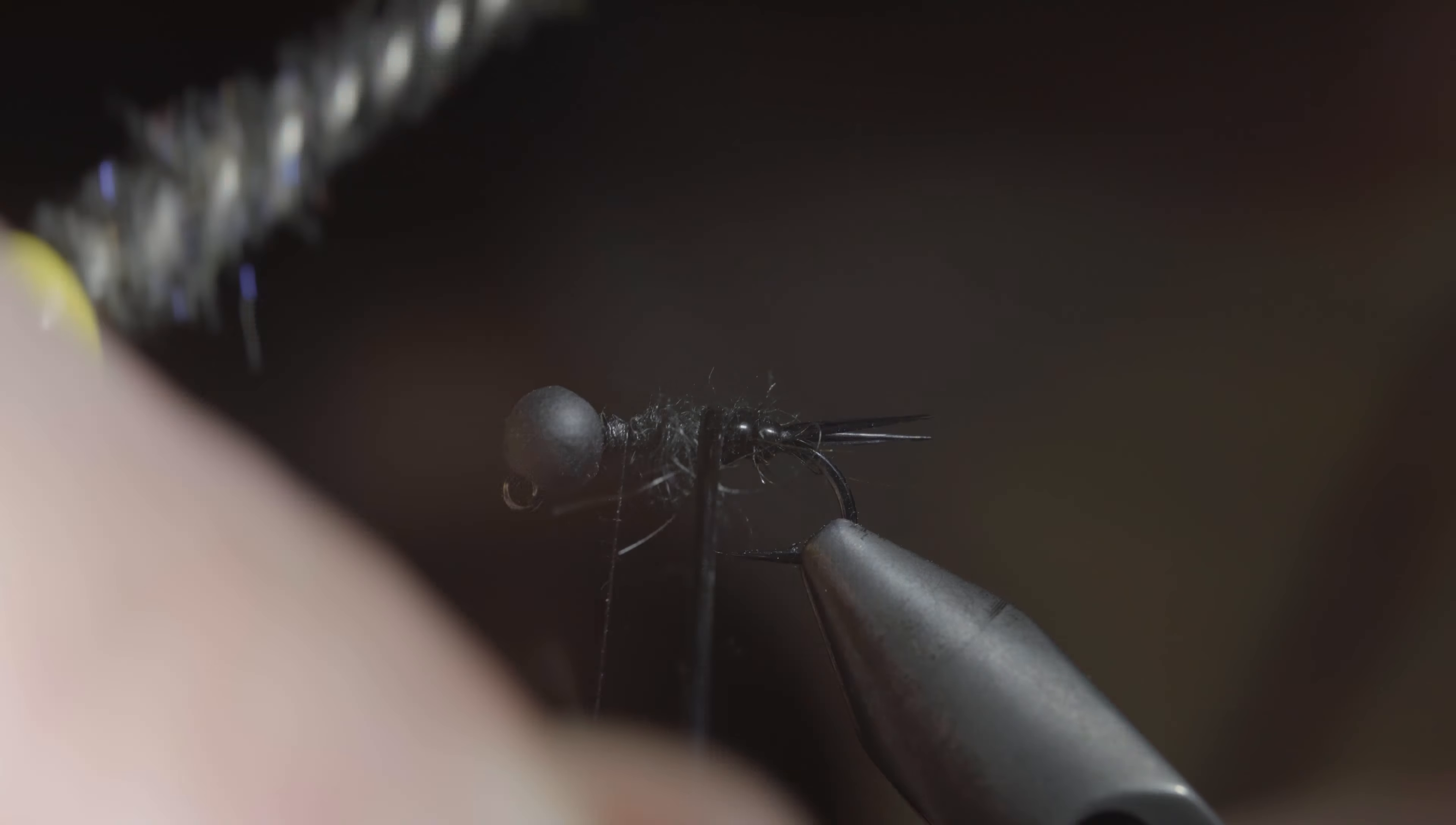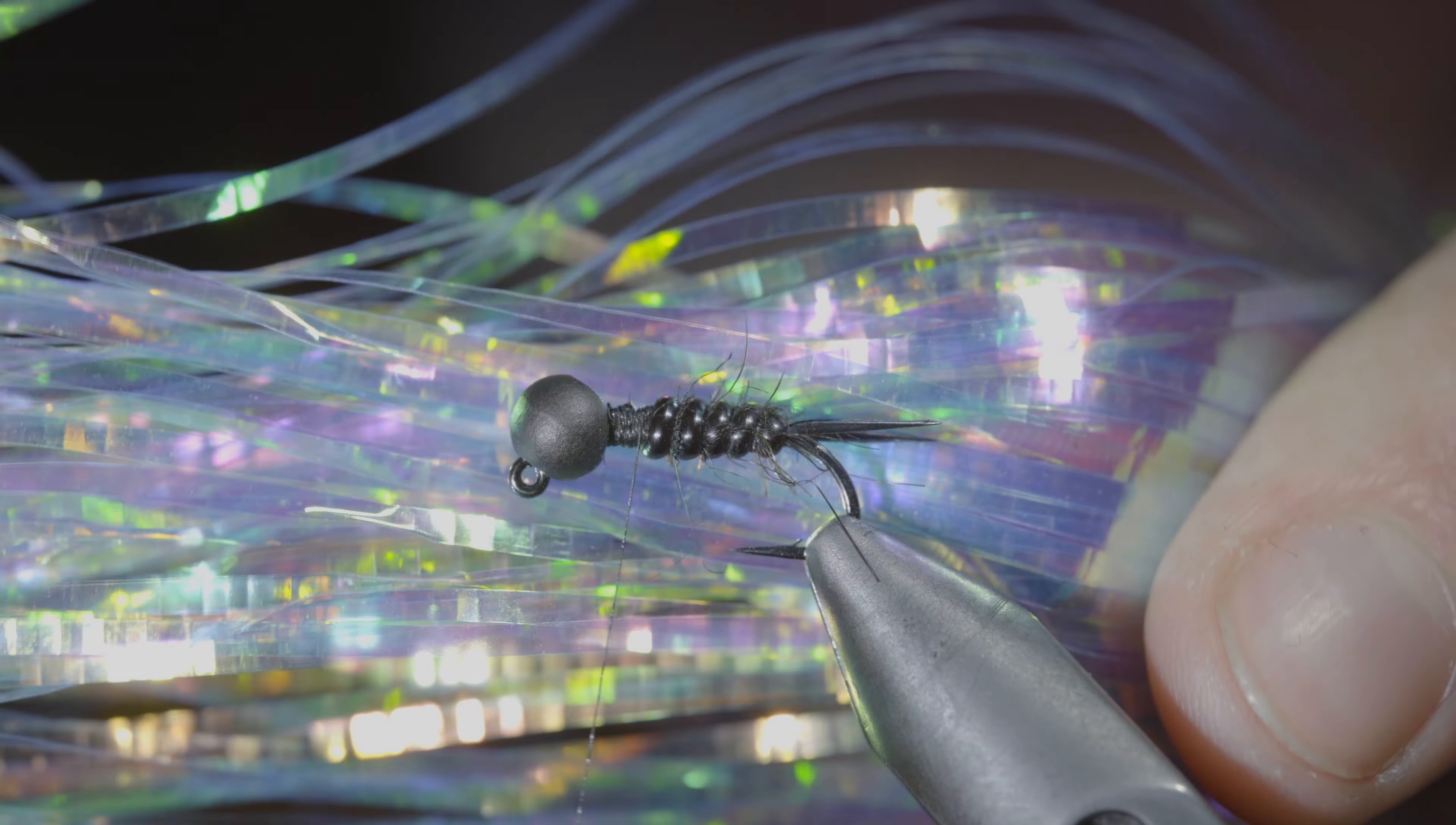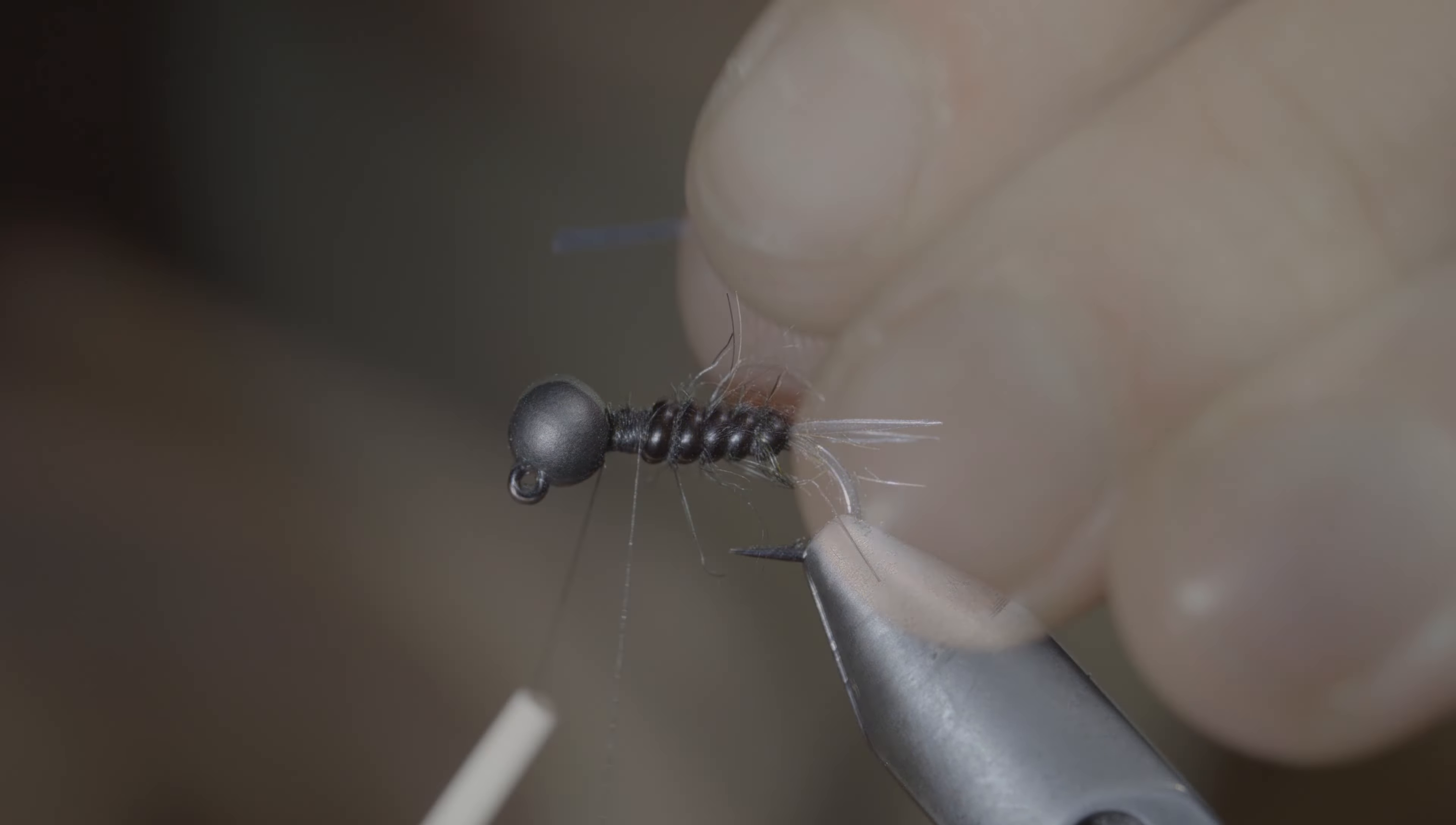Once we reach our thread, we'll secure it in place, taking thread wraps both in front as well as behind, before snipping the excess free.